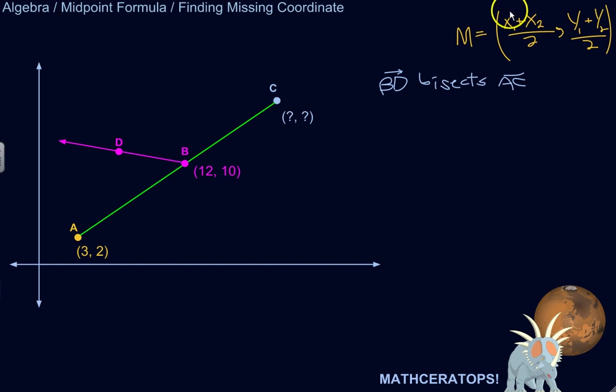The midpoint formula is x1 plus x2 over 2, and y1 plus y2 over 2. Really, all that's happening here is the midpoint coordinates are the average of the two coordinates it's between.